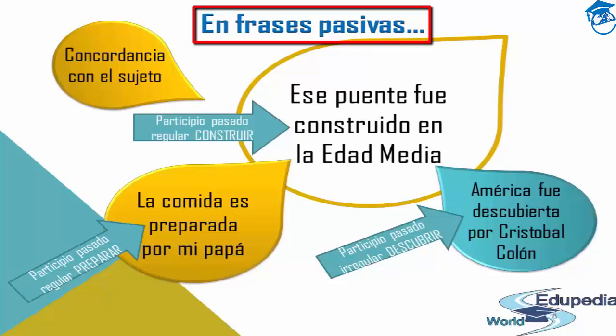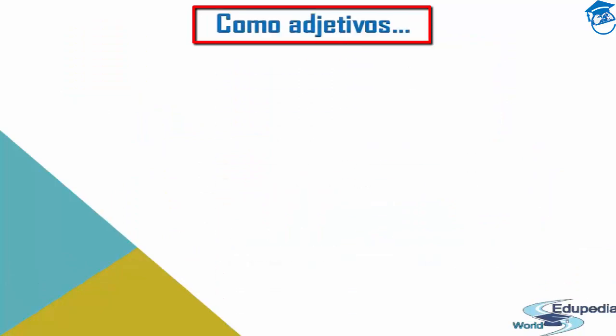'América fue descubierta por Cristóbal Colón' — America was discovered by Christopher Columbus. Here we have the irregular past participle of 'descubrir' — descubierta. As you can see, the past participle in the passive voice has concordance with the subject — tiene concordancia directa con el sujeto.